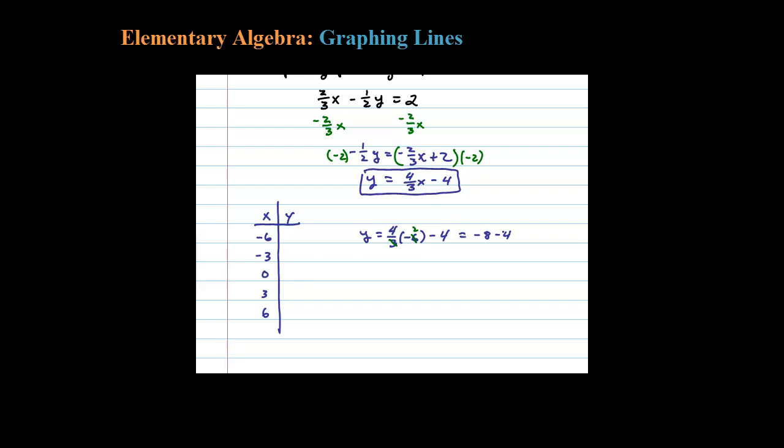There's our first ordered pair. Let's continue. Plugging in negative three, the threes cancel, leaving negative four minus four which is negative eight.